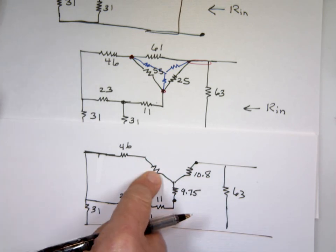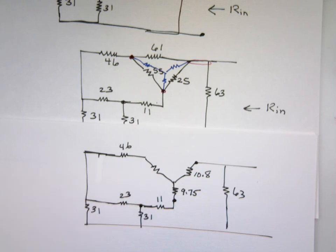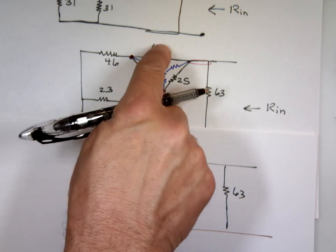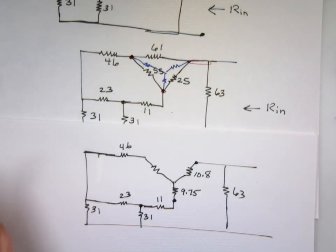This one here. It's going to be 55 times 61 divided by the sum of them. 55 times 61. The sum of them is 141. 23.8.